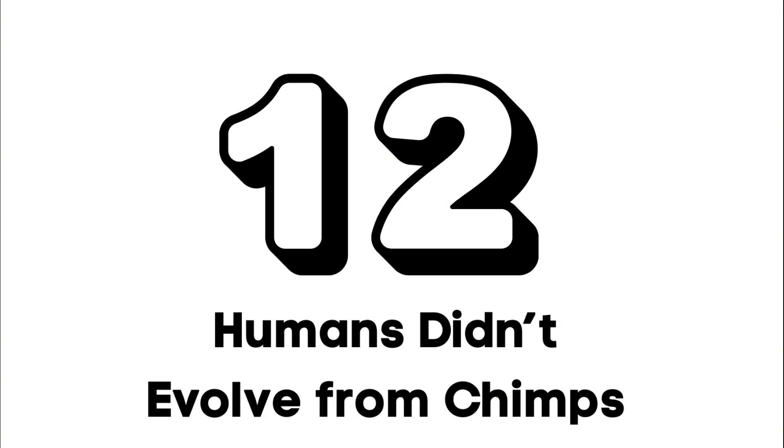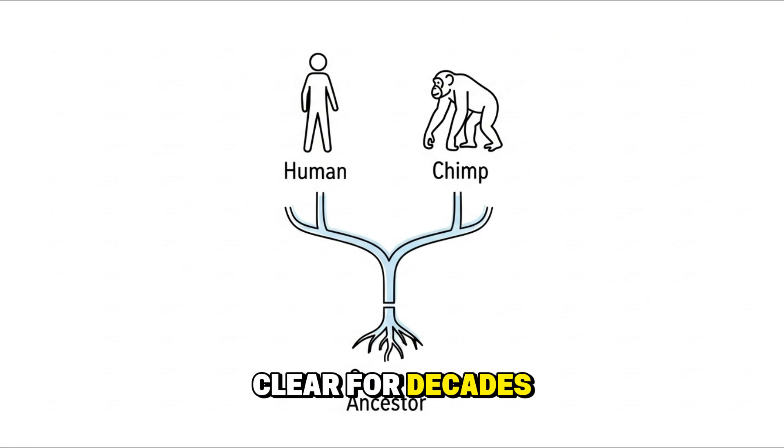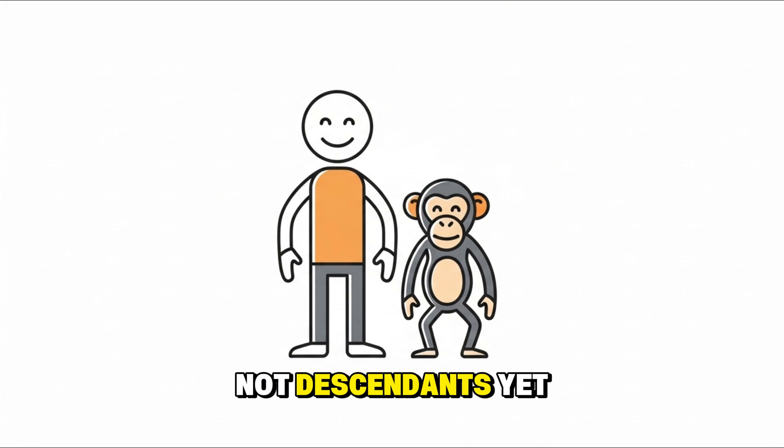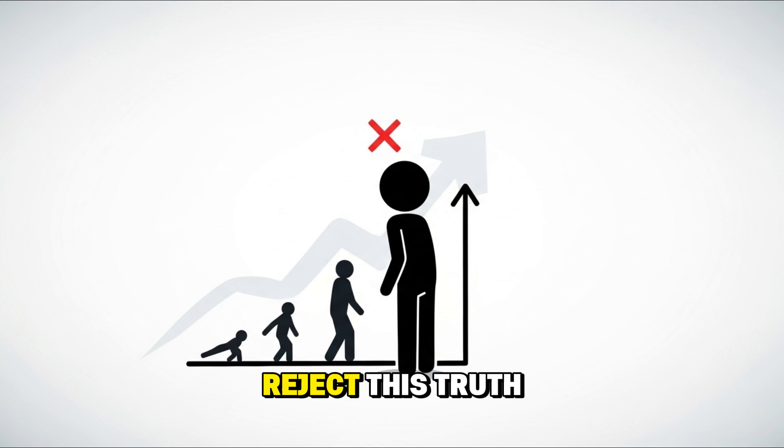Number twelve: Humans didn't evolve from chimps. Science has been clear for decades. Humans and chimps share a common ancestor, but neither evolved from the other. We're evolutionary cousins, not descendants. Yet many people still reject this truth.